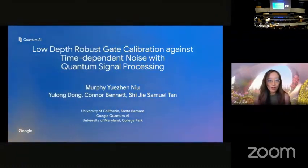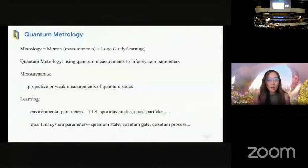Before I delve into the detailed structure of our algorithm, let me first define what I mean by quantum metrology. The metrology has two parts: metro comes from the Latin word that means measurements, and logi from logo means learning. For quantum metrology, we perform projective or weak measurements and use the measurement results to learn about system parameters, such as environmental defects or quantum state or gate values.